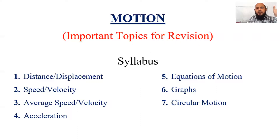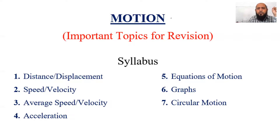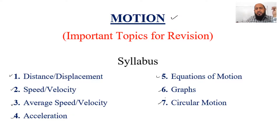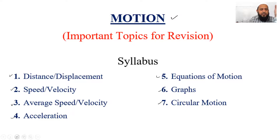When we bifurcate Chapter 1, the first chapter is Motion. The important topics here are chapters one through seven. You have to cover: distance and displacement, speed and velocity, average speed and velocity, and acceleration. These are the four foundational topics of kinematics.